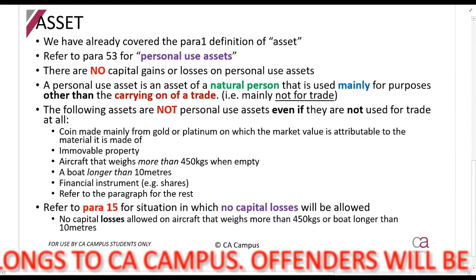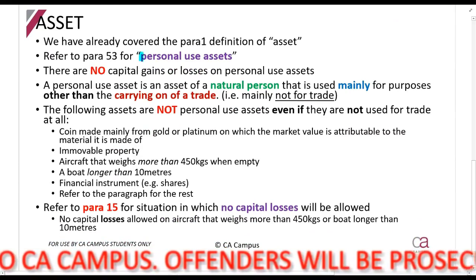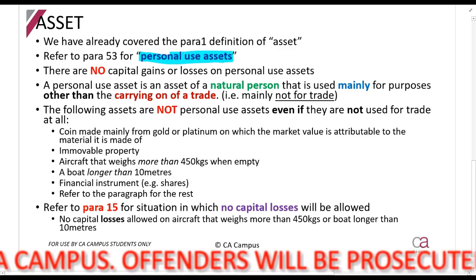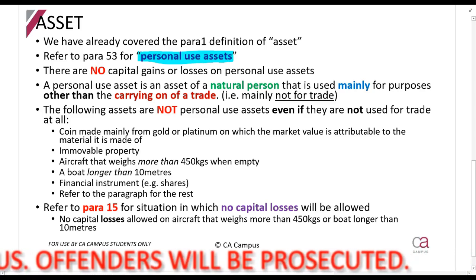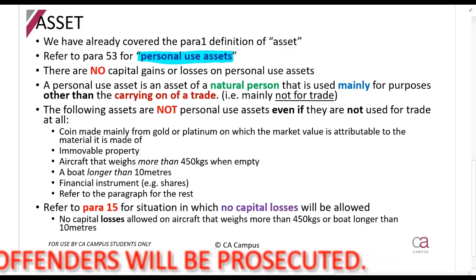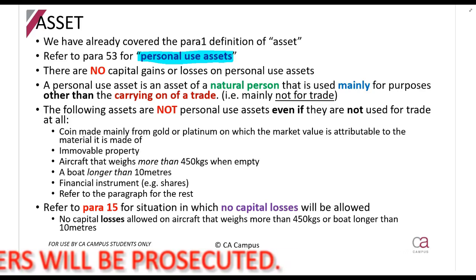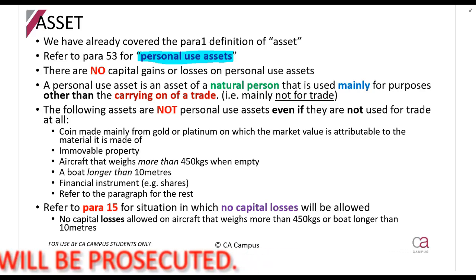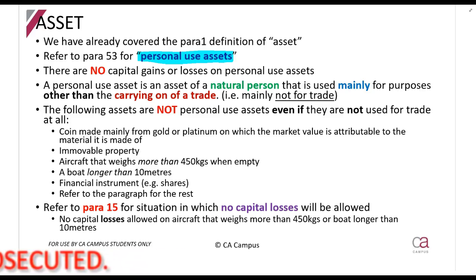What I want to talk about specifically here now are personal use assets, as discussed in paragraph 53 of the eighth schedule. If you sell or dispose of a personal use asset — both terms apply — there will be no capital gains and no capital losses calculated on them. In other words, they escape CGT free.